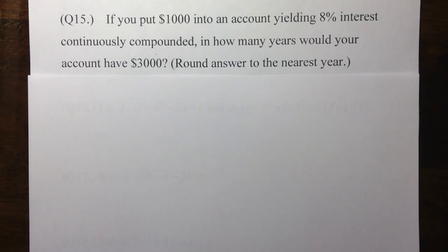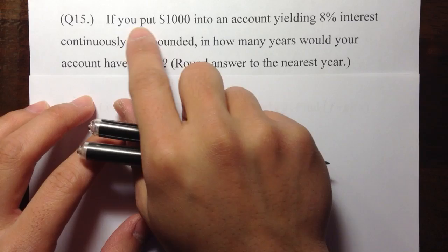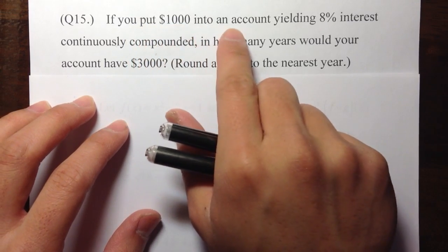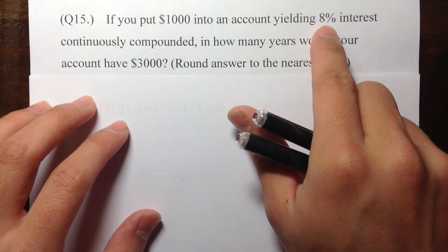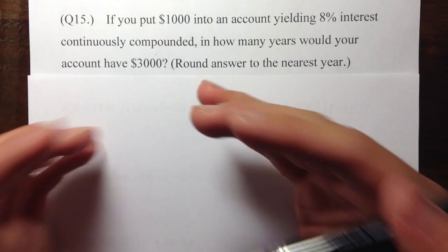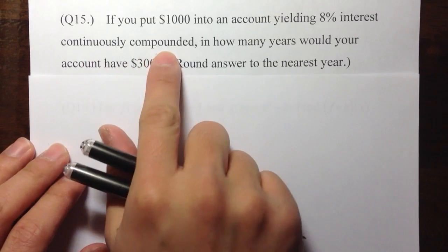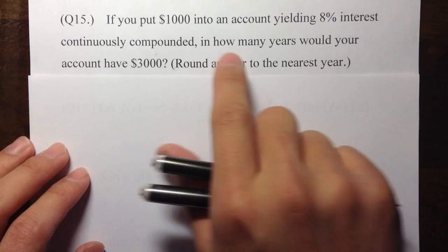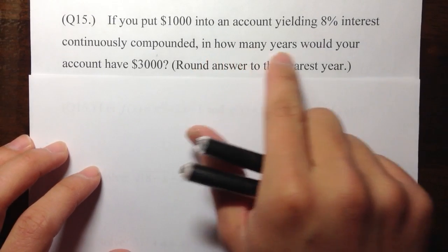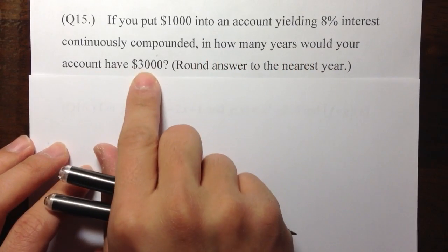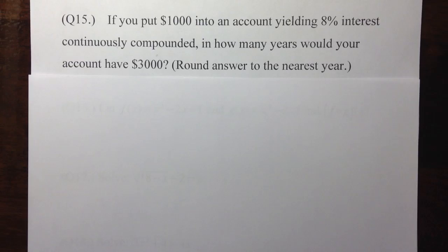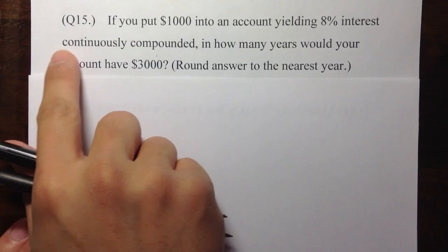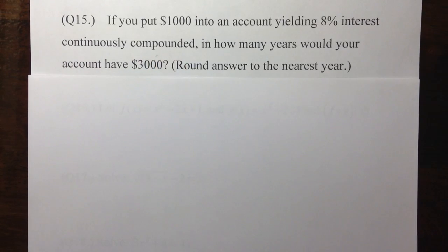Number 15 should be your favorite question because it deals with money. It says you want to put one thousand dollars into an account that will pay you an eight percent interest rate, and the account is continuously compounded — this is one of the keywords we have to pay attention to. The question is: in how many years would you be able to get a total of three thousand dollars in the account?